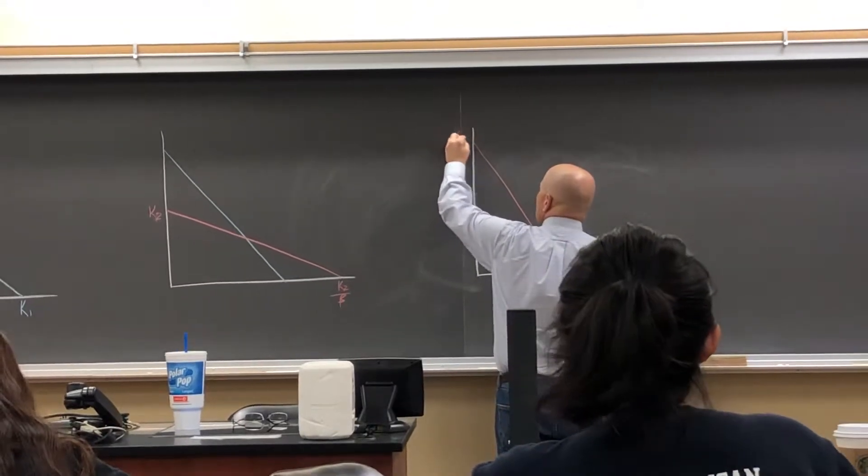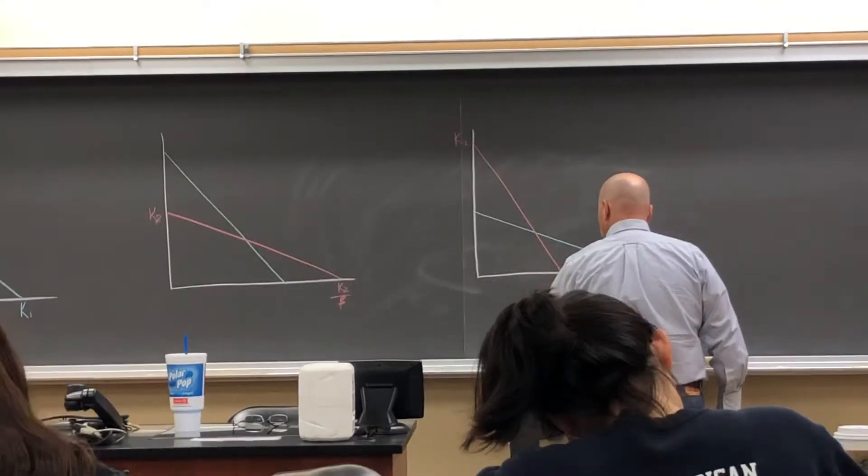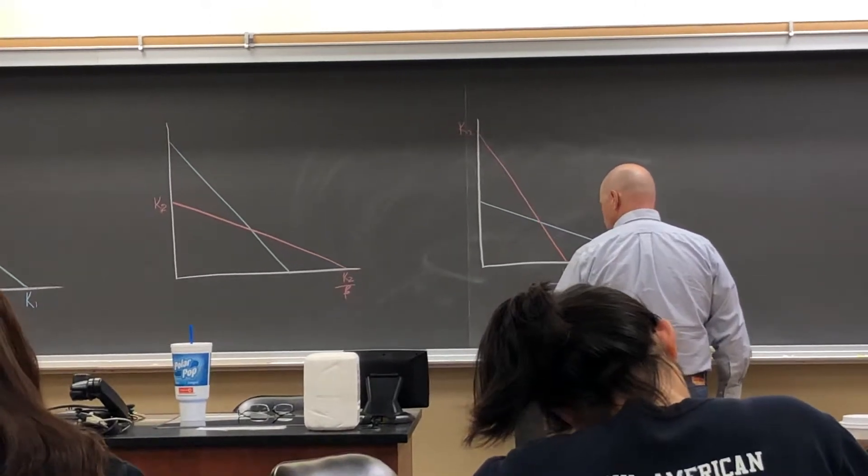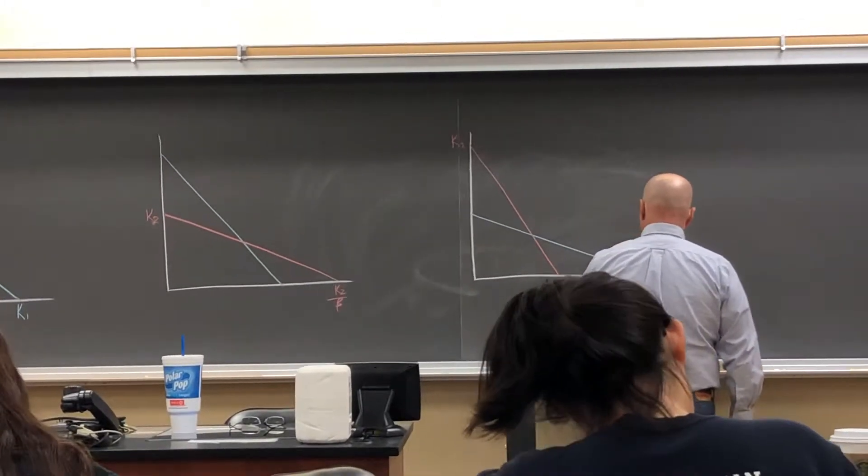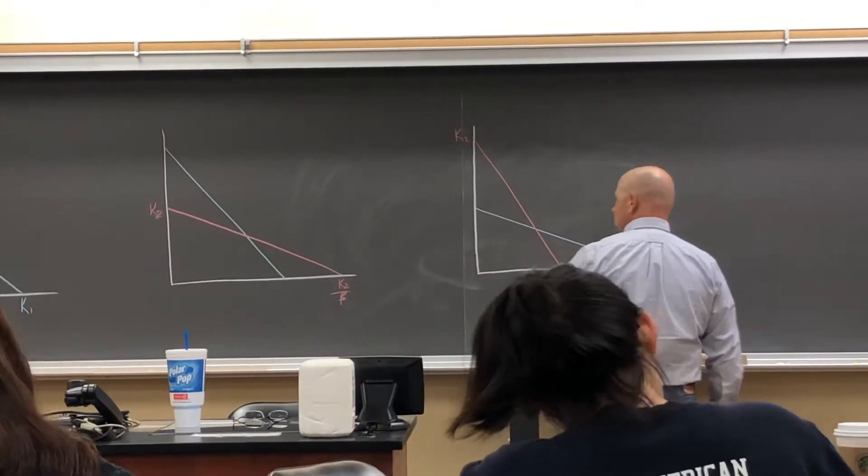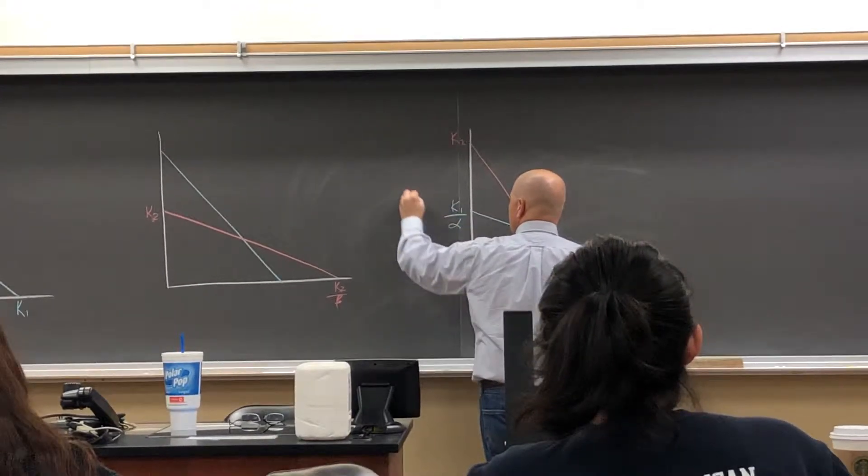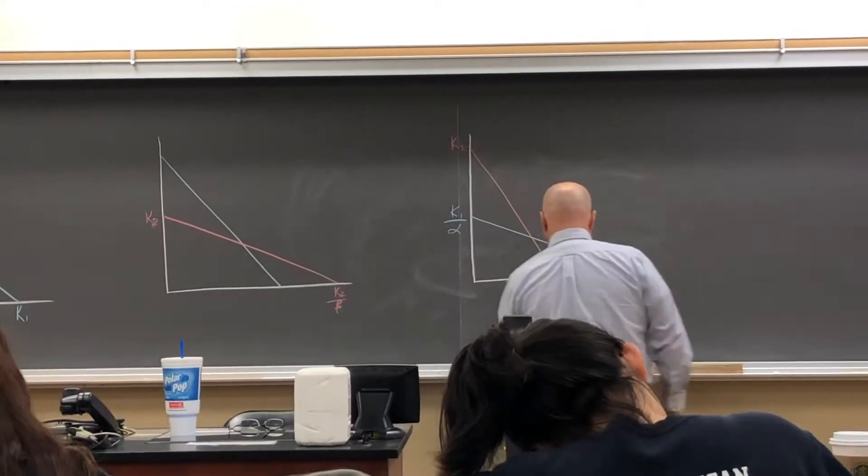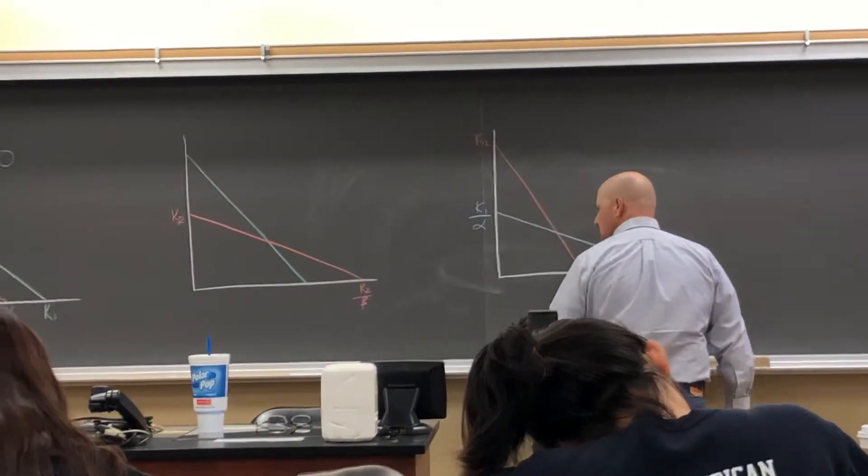k2 over beta. This will be k1 over alpha. So this is population 1 on this axis.